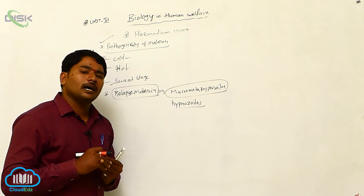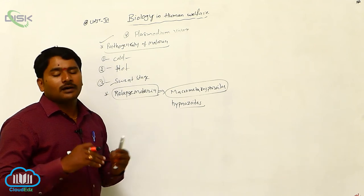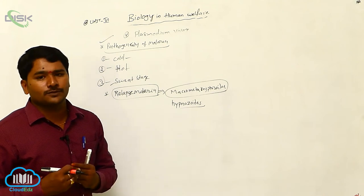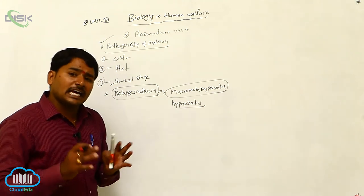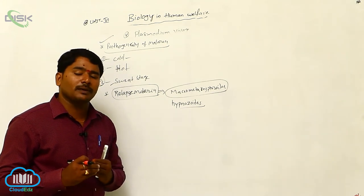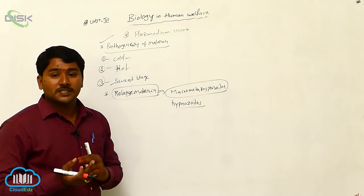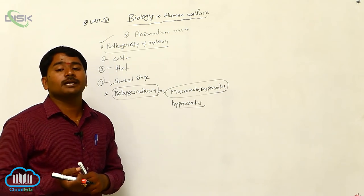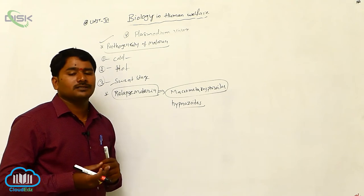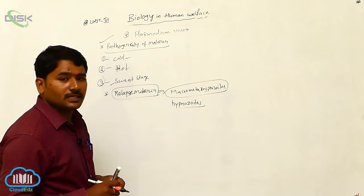When the RBCs are damaged, RBCs are continuously produced from the spleen and enlargement of spleen takes place. Splenomegaly, anemia, splenomegaly are the symptoms of malaria.